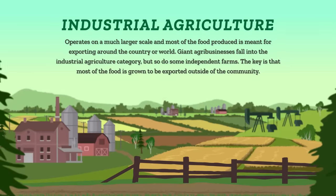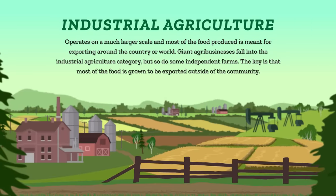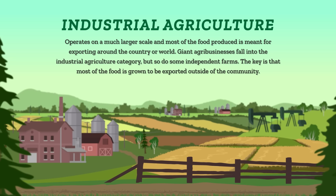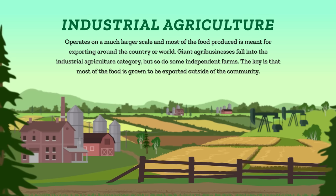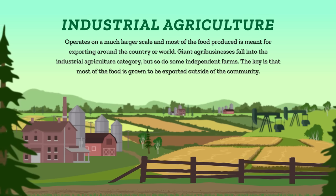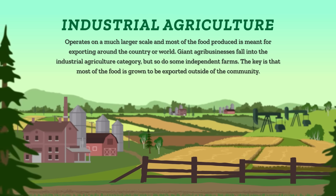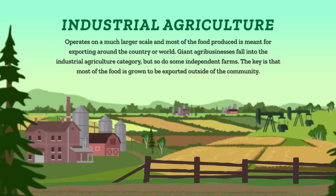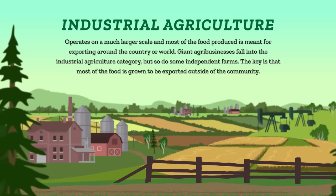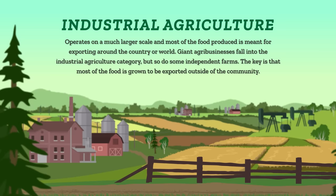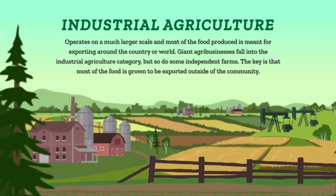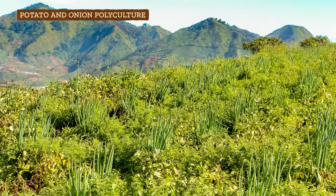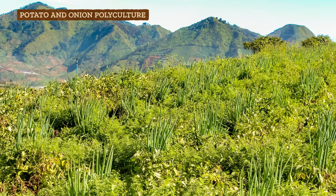But industrial agriculture operates on a much larger scale, and most of the food produced is meant for exporting around the country or world. This is a really big category. The giant agribusinesses we discussed in episode 41 fall into the industrial agriculture category, but so do some independent farms. The key is that most of the food is grown to be exported outside of the community.